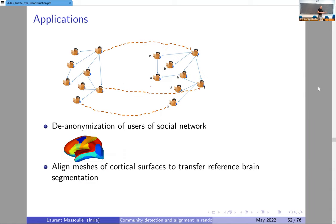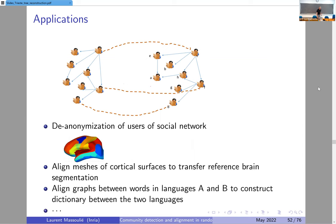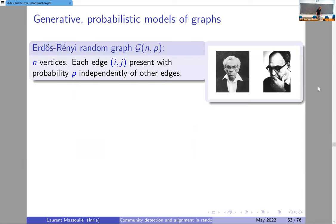Another application: if you have a mesh of the cortical surface of a brain and a reference mesh that has been carefully annotated — so you know which part corresponds to which brain area, like the Broca area — then if you have a new mesh of a patient's brain, you can align the two meshes and carry the annotation information from one to the other.